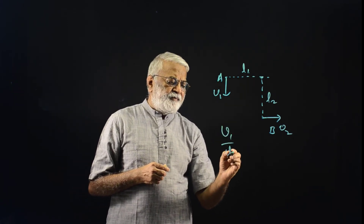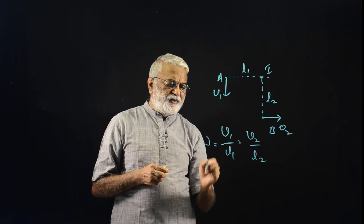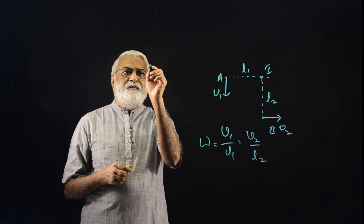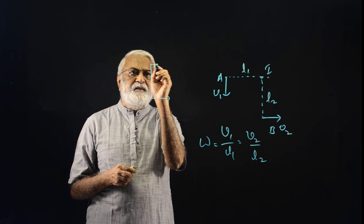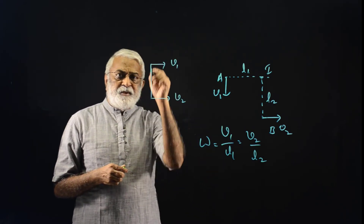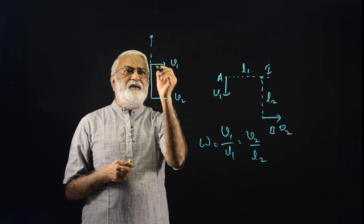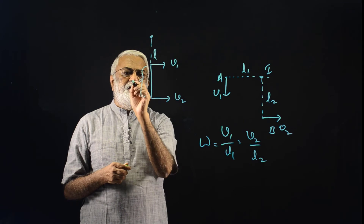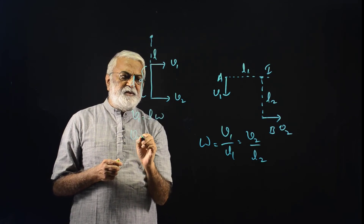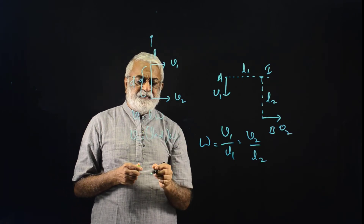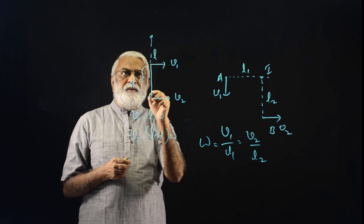V1/L1 is the angular velocity about I. If the velocities of two points are perpendicular to a common line and separated by distance D, with V1 = L·Omega and V2 = (L + D)·Omega, then knowing V1, V2, and D allows us to find L and Omega. So if the perpendicular to velocity is common, we can find the instantaneous axis this way.